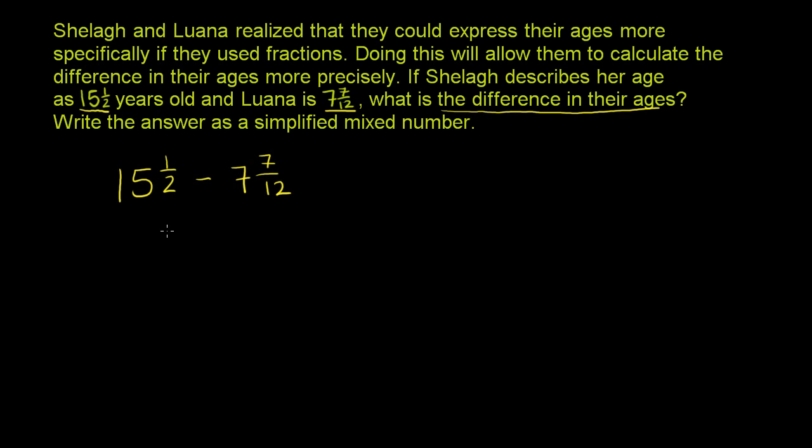1 half is the same thing as 6 twelfths, which is less than 7 twelfths. So if we separate out the whole number parts and the fraction parts, this fraction is actually smaller. The 1 half is smaller than the 7 twelfths. So it might be easier to do this as mixed numbers, so we don't have to do all that borrowing and regrouping. Let's write both of them as mixed numbers. We have 15 and 1 half. We're still going to... sorry, let's write both of them as improper fractions.